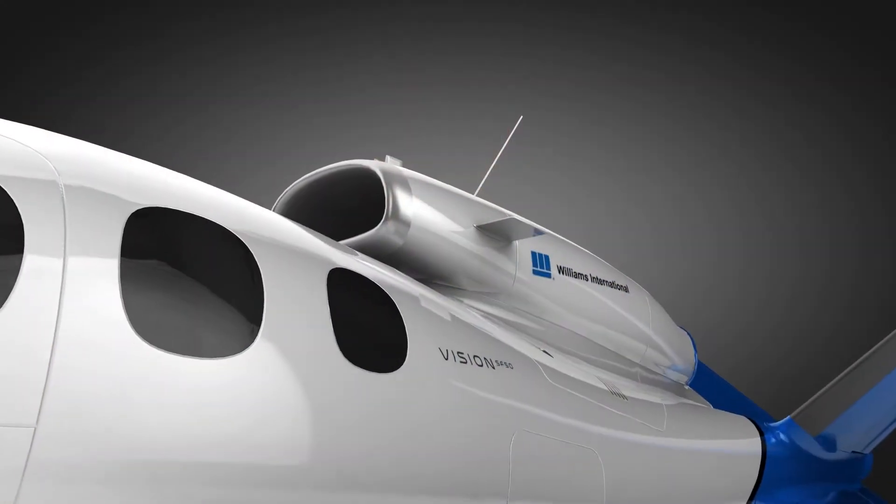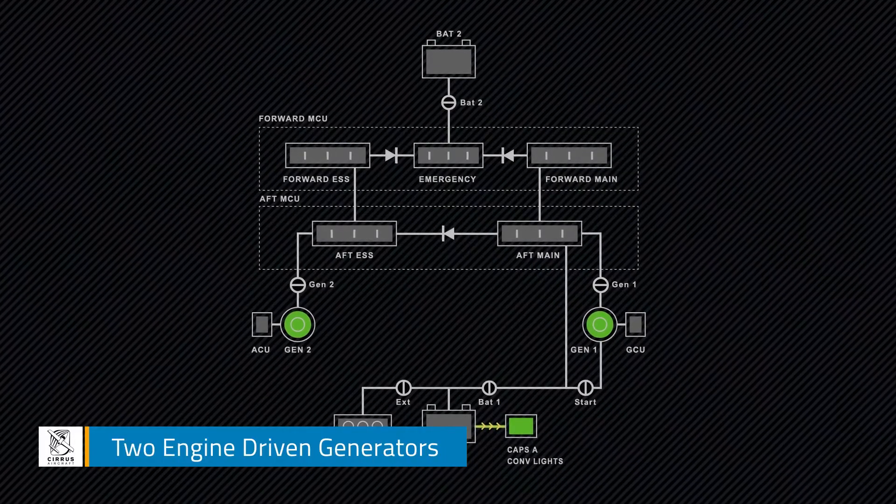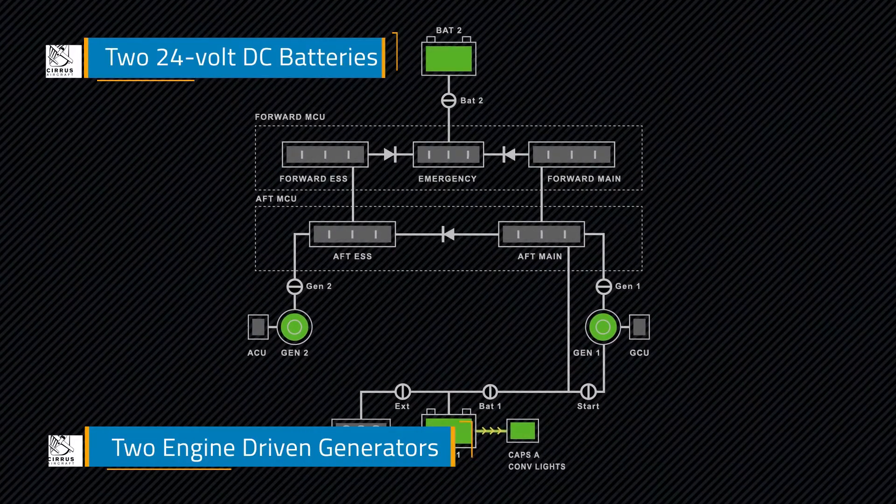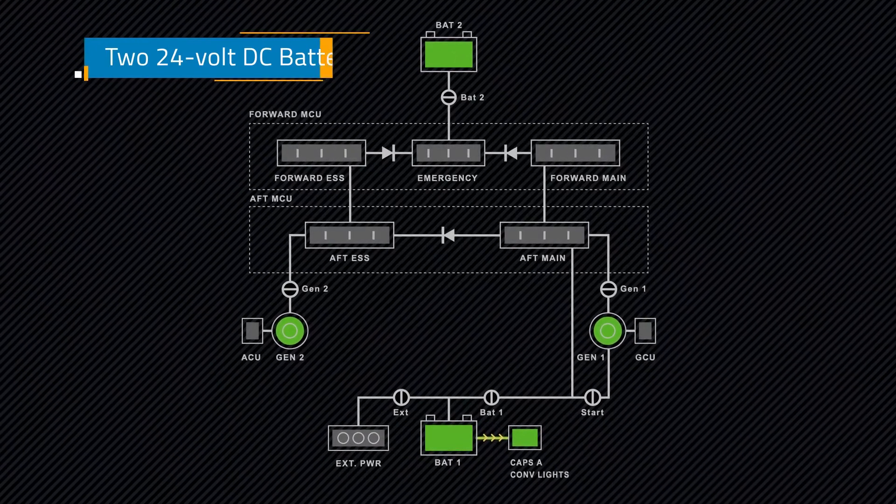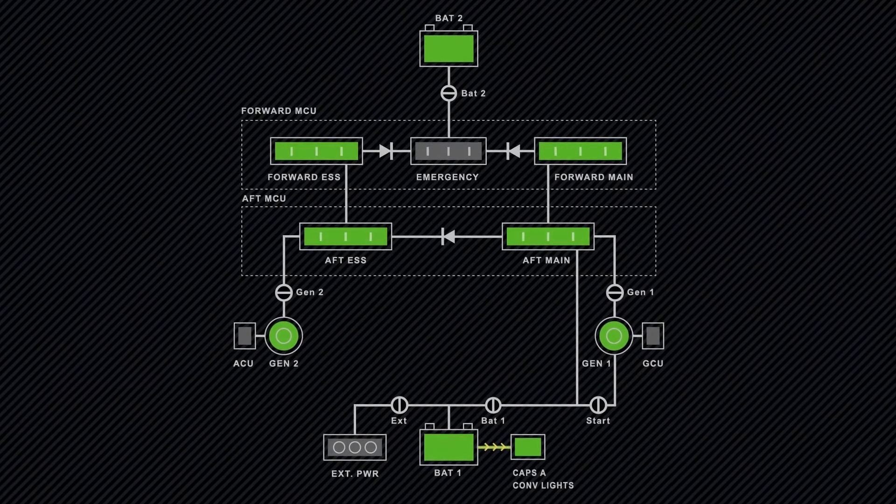Let's start at the beginning, where power comes from in the first place. The airplane is equipped with two engine-driven generators and two DC batteries. Collectively, they power three buses: main, essential, and emergency.